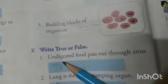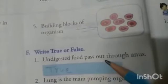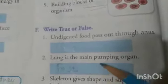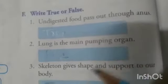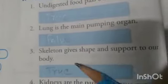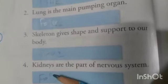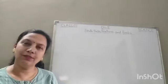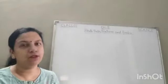Write true or false. First: undigested food passes out through the anus — true. Second: lung is the main pumping organ — false, because heart is the main pumping organ. Third: skeleton gives shape and support to our body — true. Fourth: kidneys are part of the nervous system — false. Now children, let's start our new chapter.